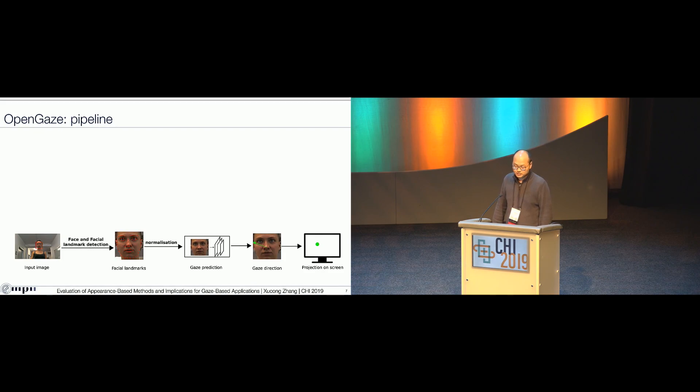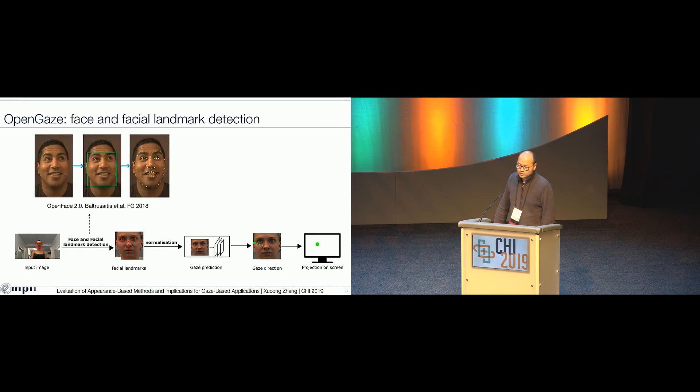Given an input image from a webcam, a single RGB image, we first do face and facial landmark detection. And then we crop out the face image according to the detected facial landmarks. We feed that face image into a gaze estimation model to output the 3D gaze direction. And with additional calibration information, we can project this 3D gaze direction to a 2D screen. More specifically, for the face and facial landmark detection part, we use the OpenFace 2.0 library. This is an open source library and also the state-of-the-art of its own kind for facial landmark detection.